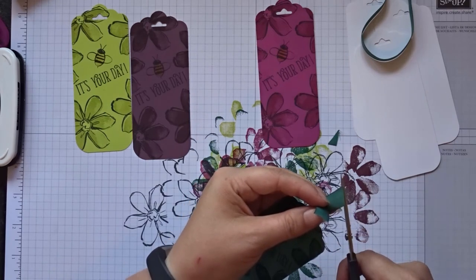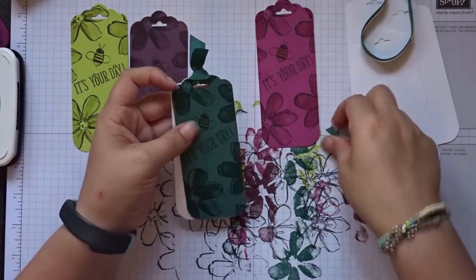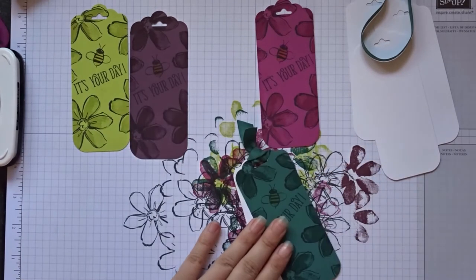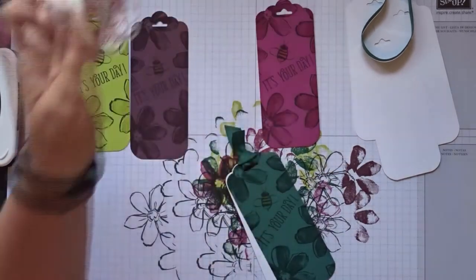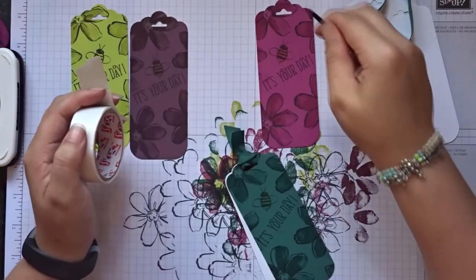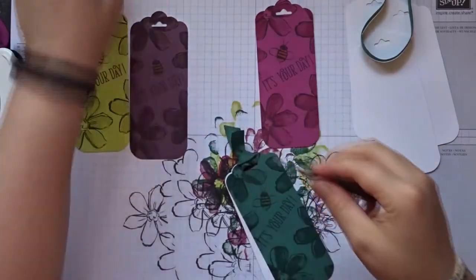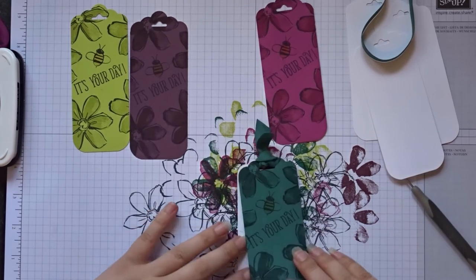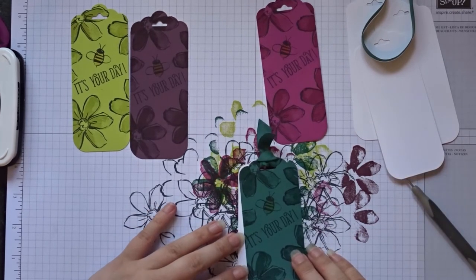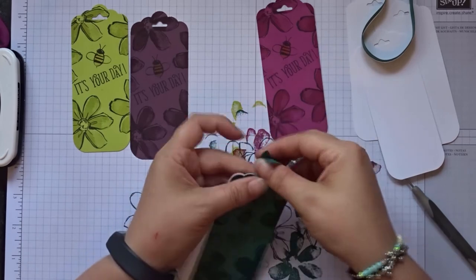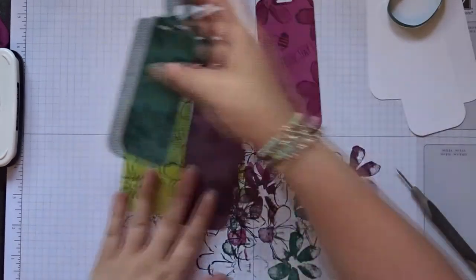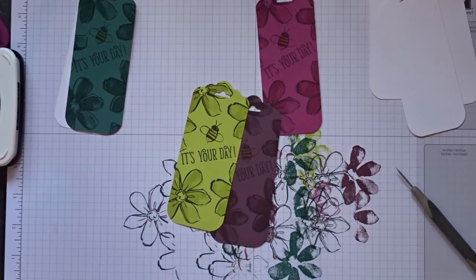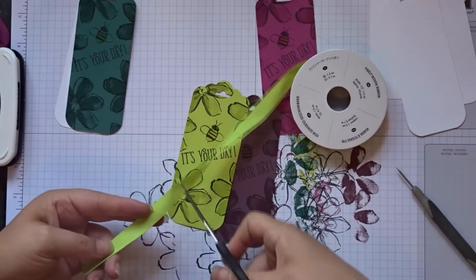You can use a lighter just to burn those. Then what we're going to do is grab a mini glue dot with our paper piercing tool. Grab a glue dot and we're just going to put this on the white just so we can open them. We can make them overlap as we wish. I'm going to do this for all of them.